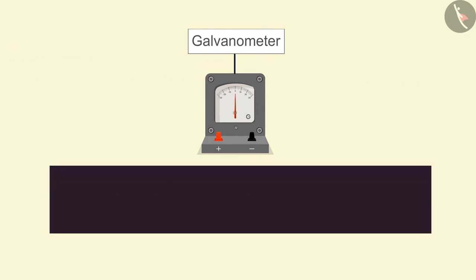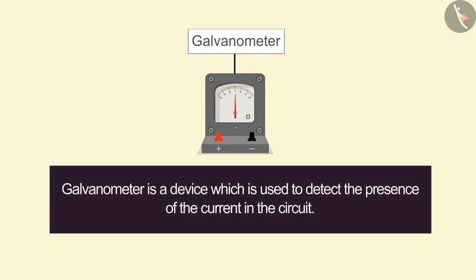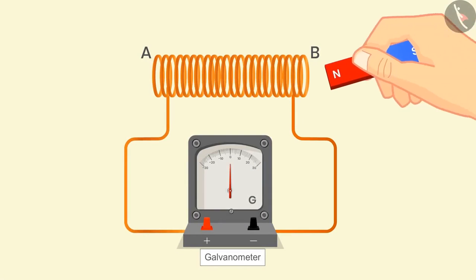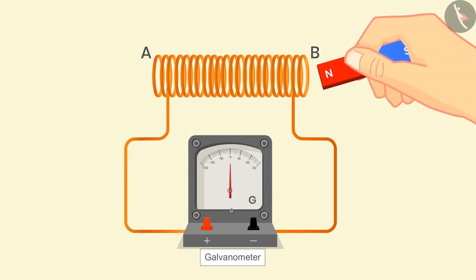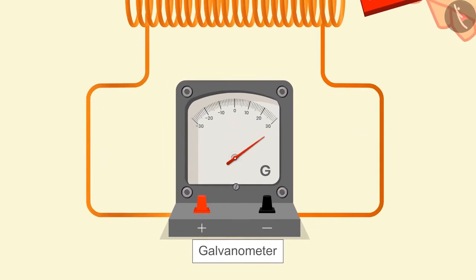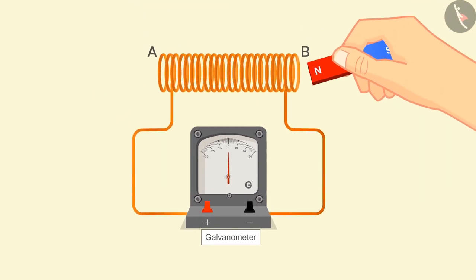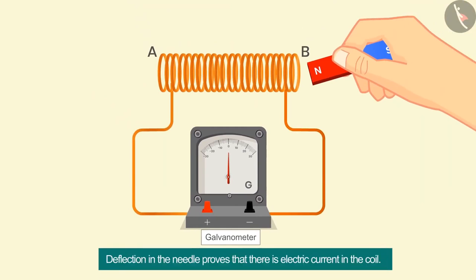A galvanometer is a device which is used to detect the presence of current in the circuit. After connecting the galvanometer in the circuit, take the north pole of the magnet near the coil. Then a deflection in the galvanometer's needle can be seen — let us assume the deflection is on the right side.